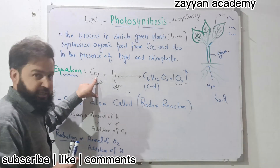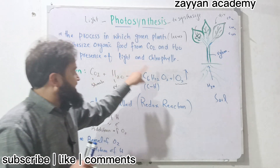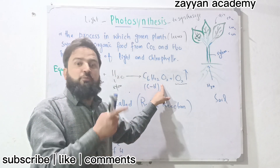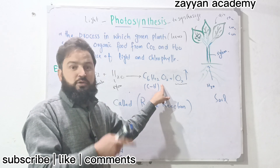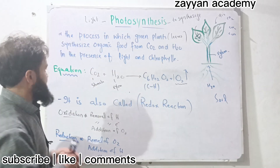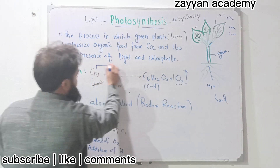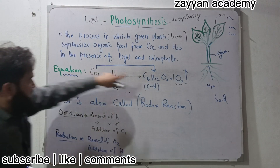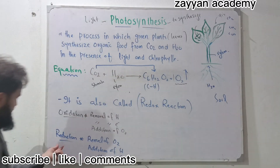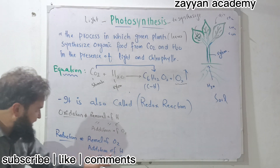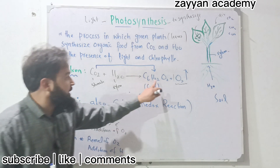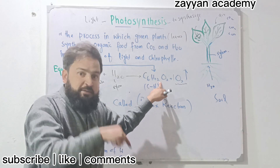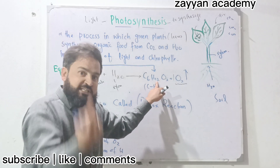When CO2 is reduced, the addition of hydrogen or electrons occurs. This reduction of CO2 involves addition of hydrogen or electrons.